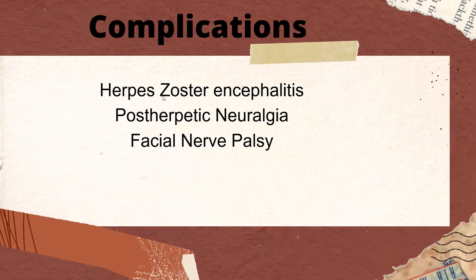Complications of shingles include herpes zoster encephalitis and post-herpetic neuralgia, where the patient presents with pain in the region where the rash was, even after the rash has resolved. Rarely, patients may also present with facial nerve palsy.